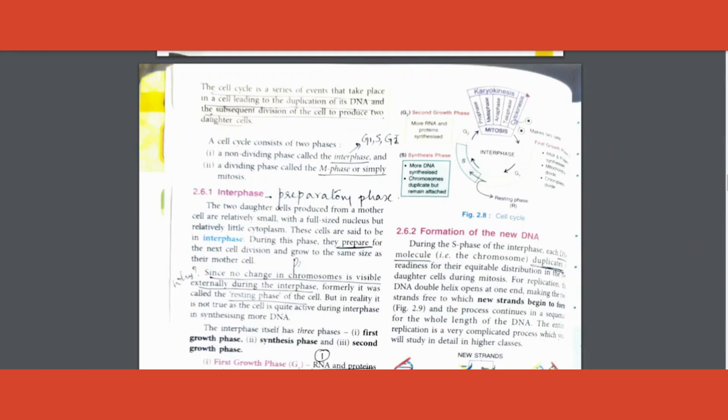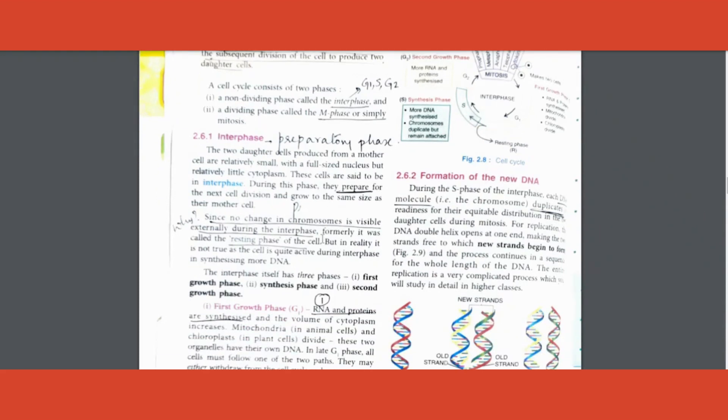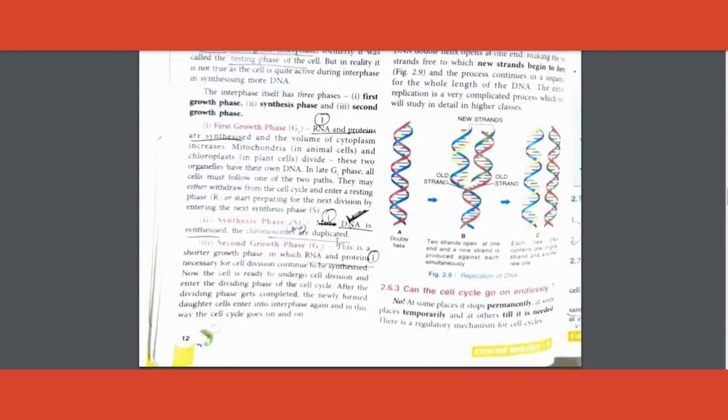G1, S and G2 form the preparatory phase called the interphase. Why is it called resting phase is again a question. It's considered resting phase because it's a preparatory phase wherein no change in chromosome is visible, therefore it was called resting phase before. Now we call it interphase or the preparatory phase.